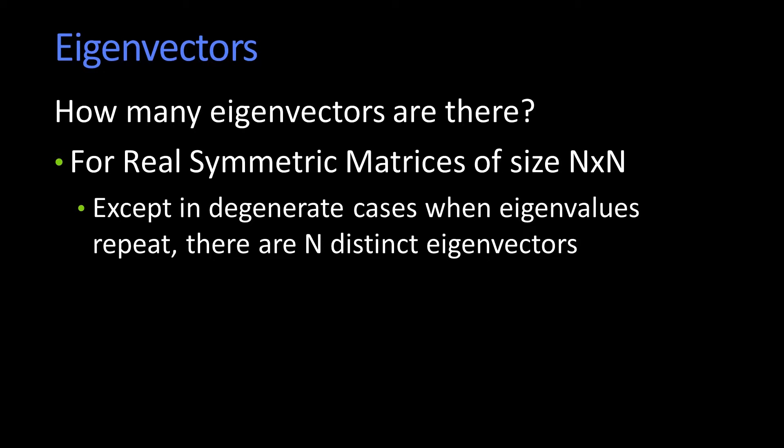But just remember that normally, and the reason I say normally is later it's going to be a little different. Normally with an n by n matrix, I'm going to have n eigenvectors.